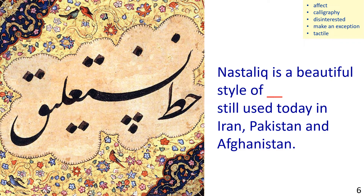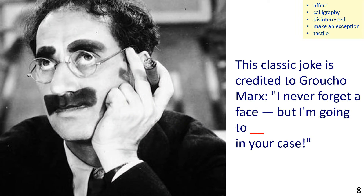Next, the picture shows an example of writing in Urdu Nastalik. The sentence reads: Nastalik is a beautiful style of blank still used today in Iran, Pakistan and Afghanistan. The answer is: Calligraphy.